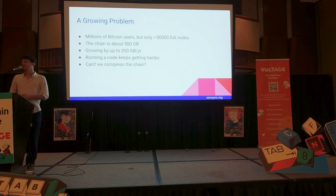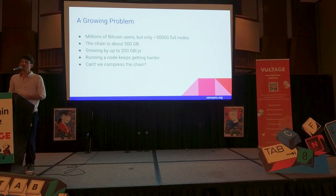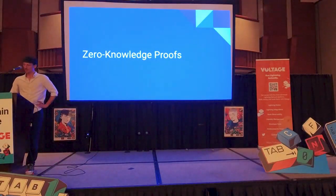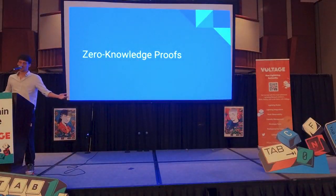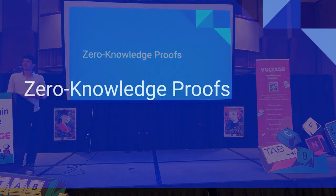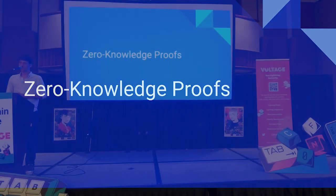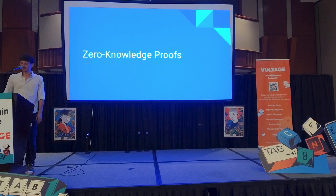Unfortunately, we cannot really compress the chain because it consists mostly of hashes and stuff like that, which is mostly random data, and then the data you cannot really compress. But magic internet money needs magic moon math, which is zero-knowledge proofs. And zero-knowledge proofs have very magical properties.